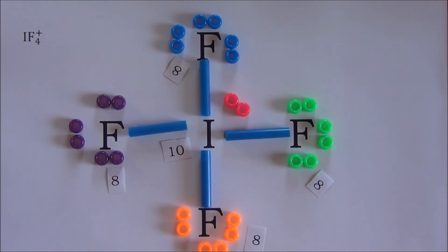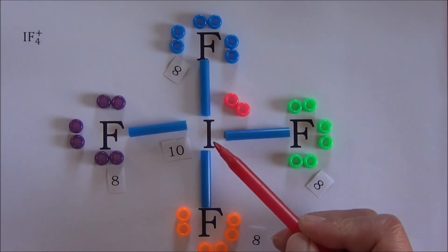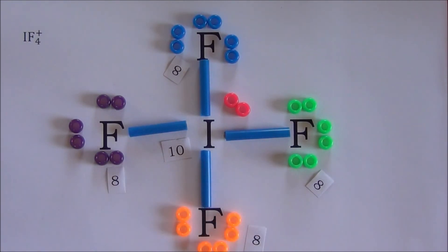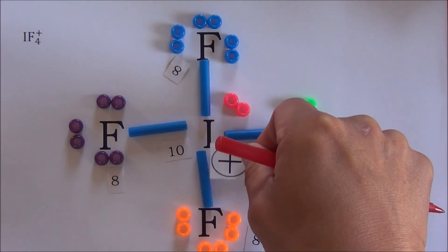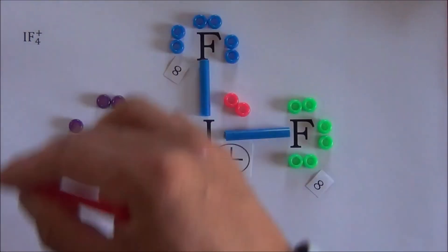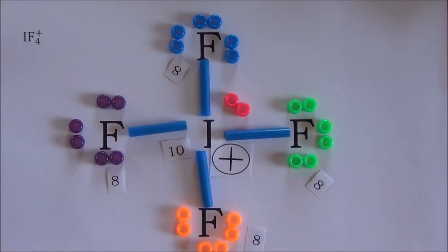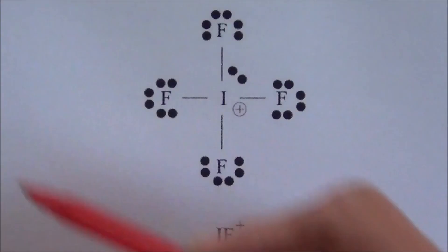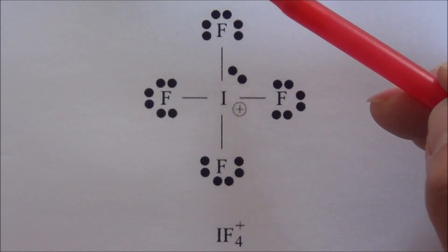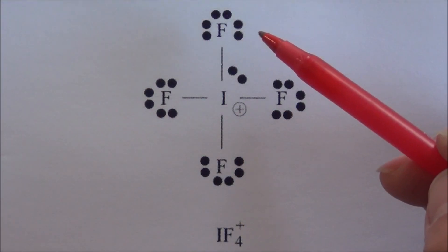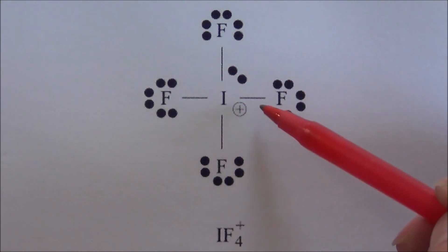But remember, do not forget to calculate the formal charges of all atoms. After our calculation, we find that only the central atom has a plus one formal charge. All the other atoms have zero formal charge. Therefore, we need to place a plus one formal charge next to the central atom. From the Lewis structure we just got, it has four single bonds and does not have any double bond or triple bond. Therefore, this ion should only have one Lewis structure — it does not have resonance structures. This should be the Lewis structure you need to present during an exam or quiz for this ion.